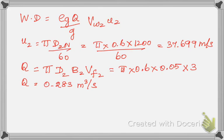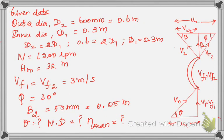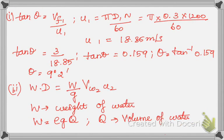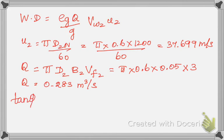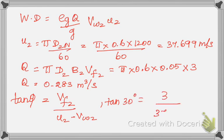To find vw2, we refer to the outlet velocity triangle. Using tan φ = vf2 / (u2 − vw2): tan 30° = 3 / (37.699 − vw2). Solving this equation gives vw2 = 32.503 m/s, which is the whirl velocity at the outlet.